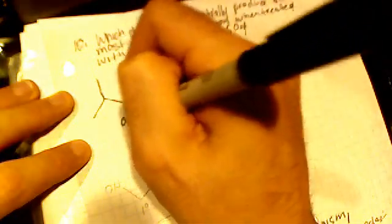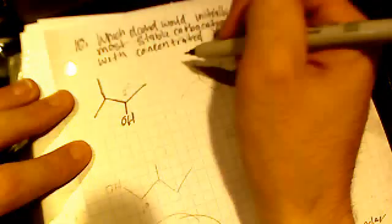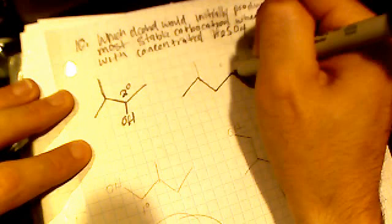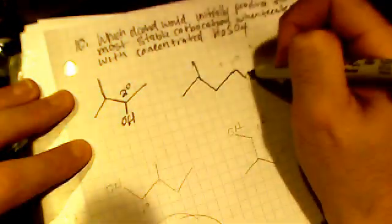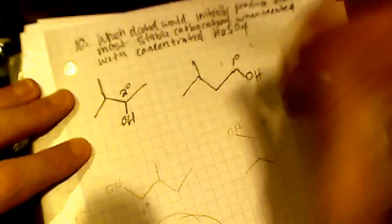So, here are our alcohols. If this got protonated and left, you would be left with a second degree carbocation. If this OH group got protonated and left, you would have a first degree carbocation.